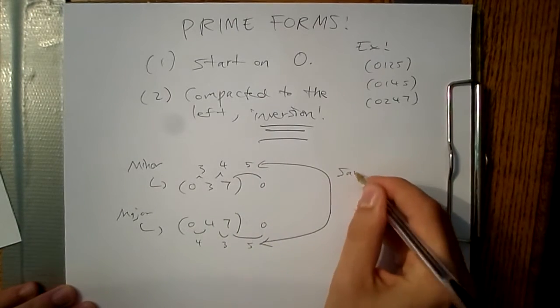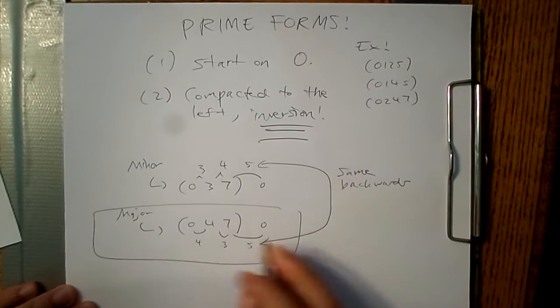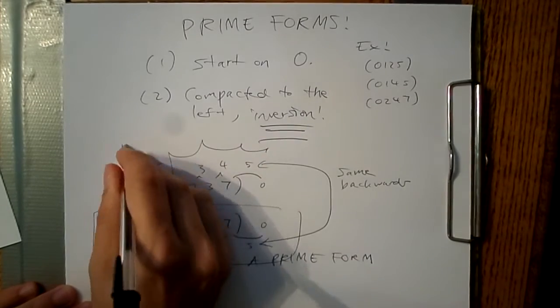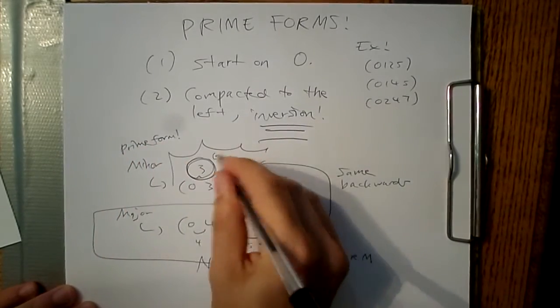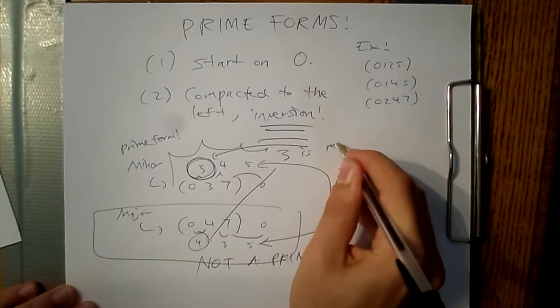This means that a major chord and a minor chord both have the same prime form, for example, and the minor chord is the prime form. Oh, and we also write prime forms in parentheses, not brackets.